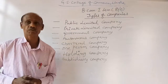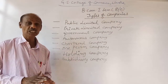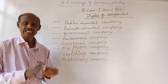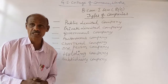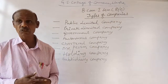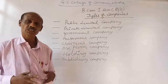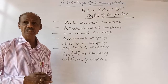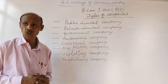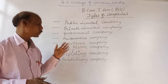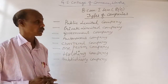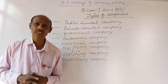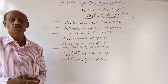The next type is a government company. A company which is wholly and solely subscribed, invested, maintained, and controlled by the government — whether a state government, the central government, or a combination of both — is called a government company. Here, the government conducts business in the form of a company as its business structure.